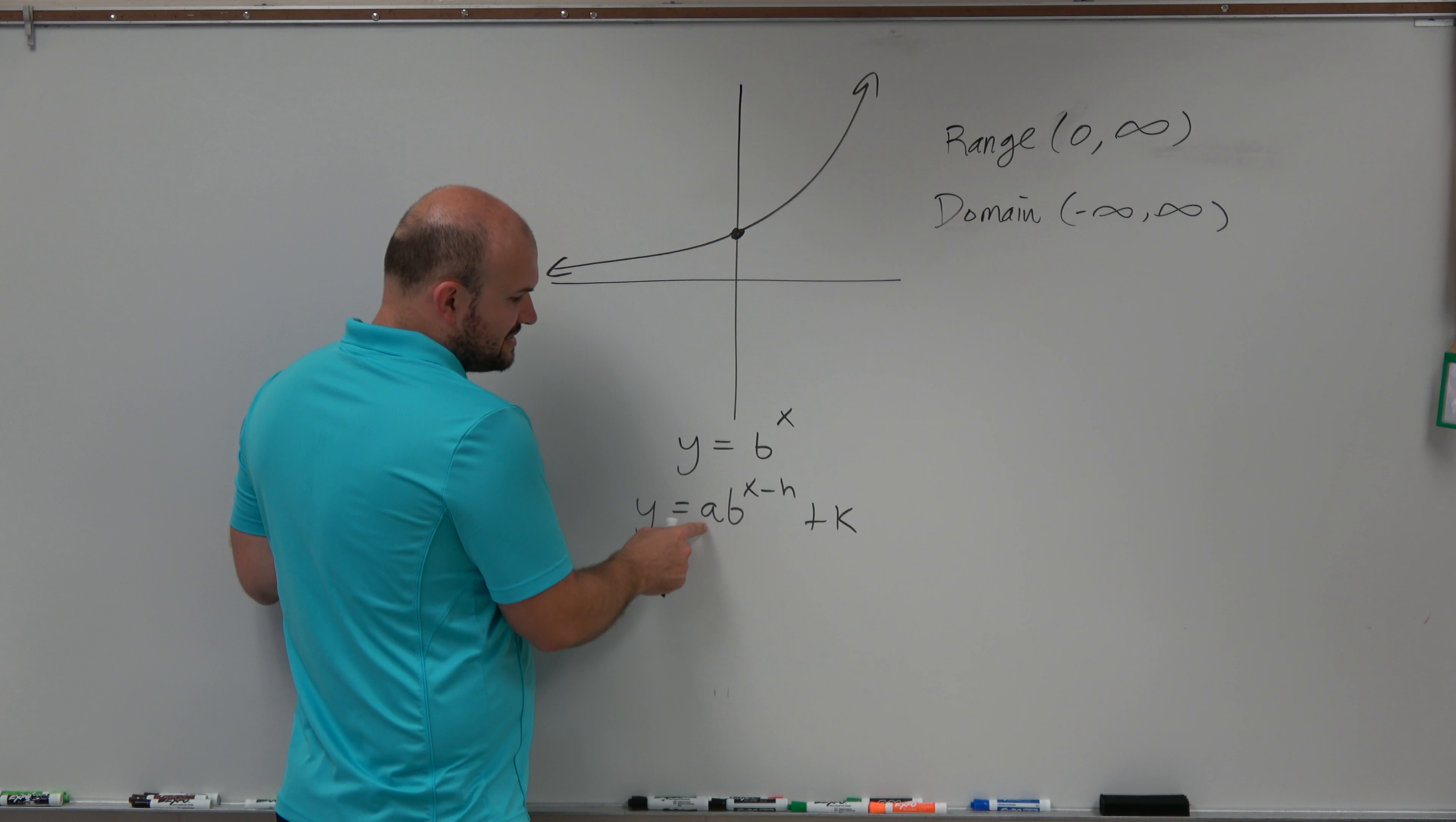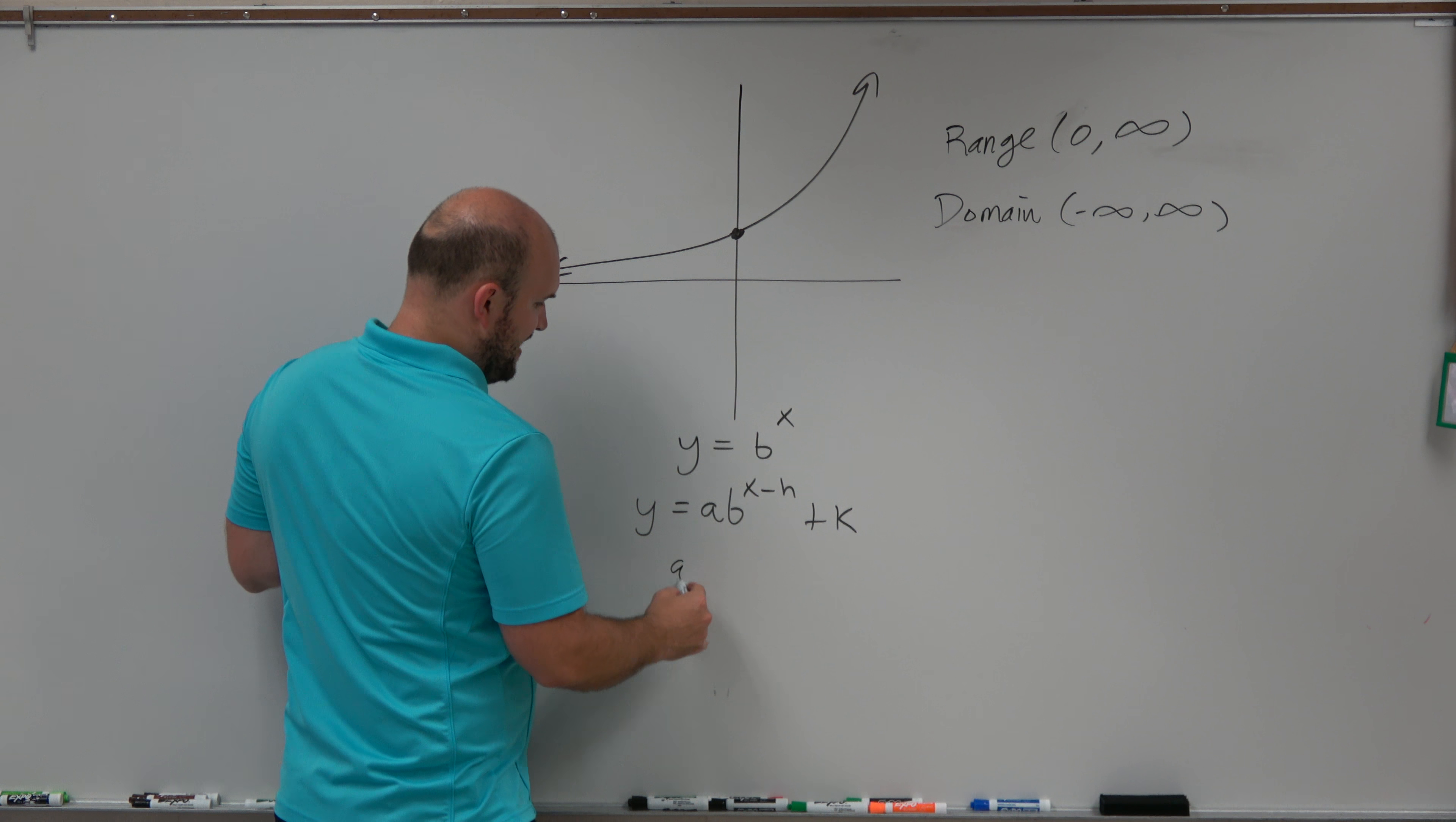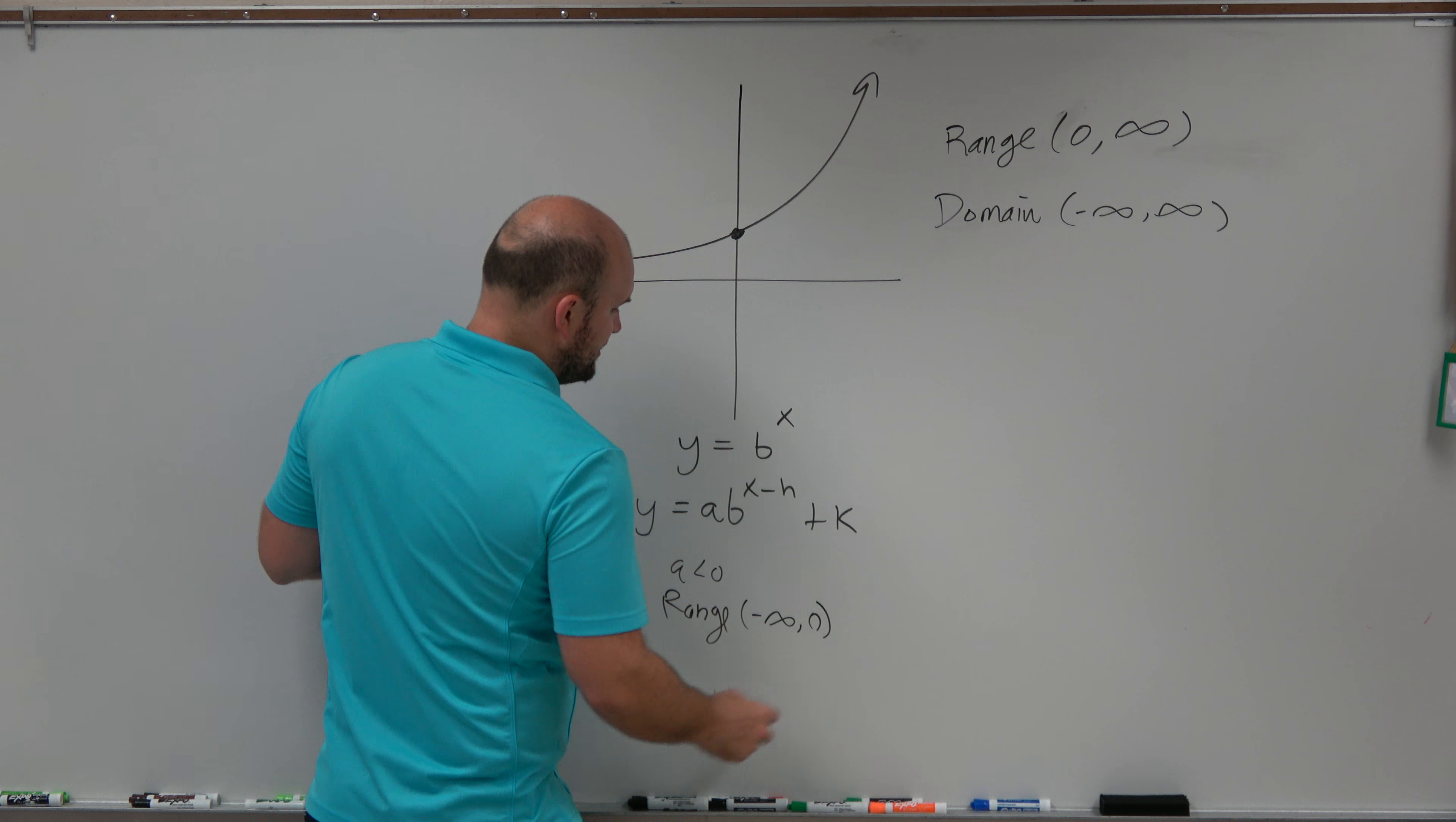So what's important is, if a is going to be negative, what that does is that's going to now change my range. So you can look at this. If a is less than 0, then my new range, this graph basically gets reflected to negative infinity to 0.